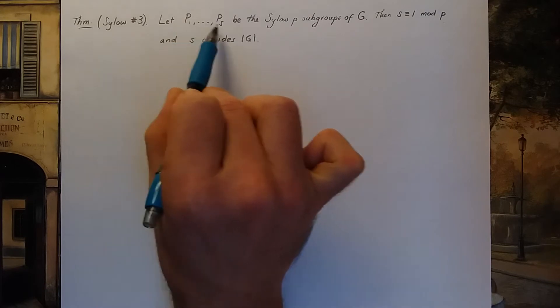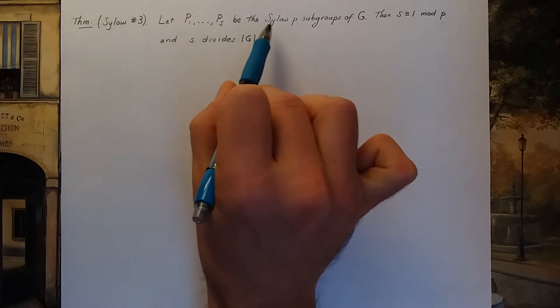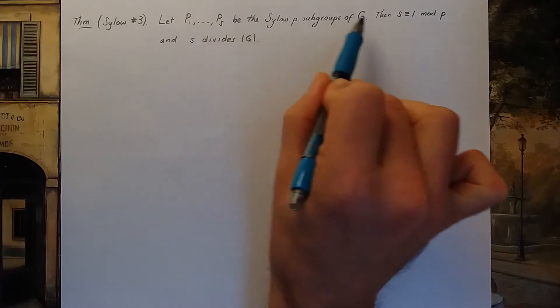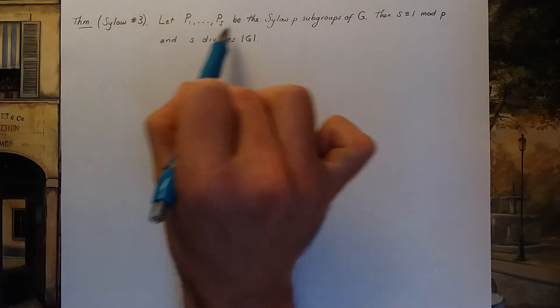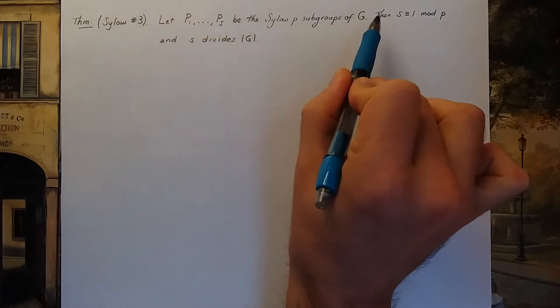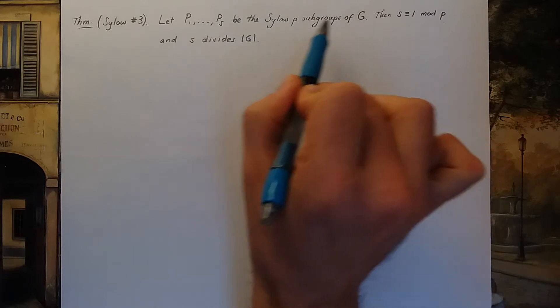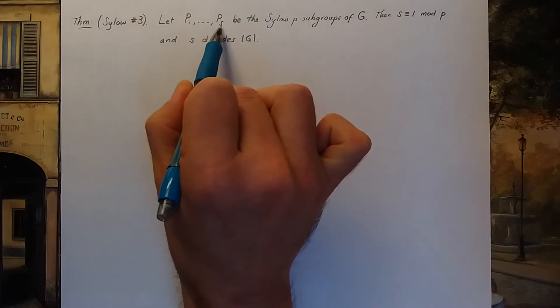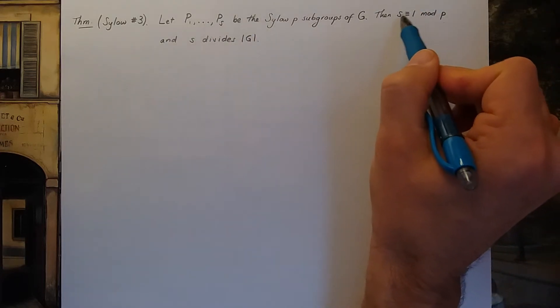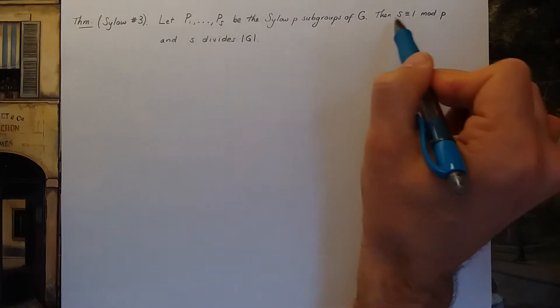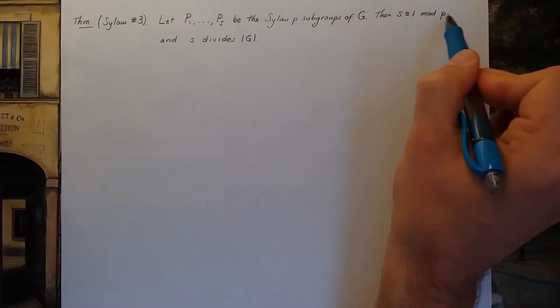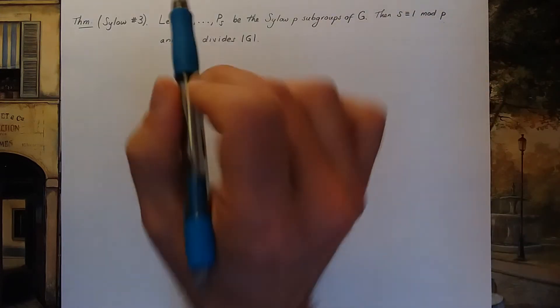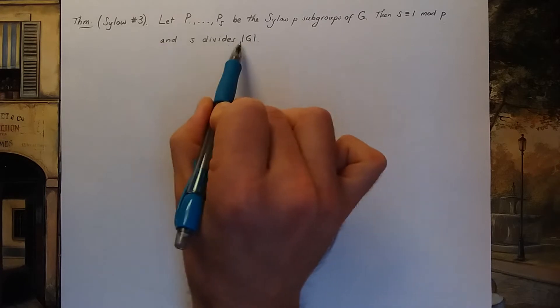Let P₁ through Pₛ be all possible CELO p-subgroups of G. So write down all possible CELO p-subgroups of G. There are S of them. This theorem says that S is congruent to 1 mod p. That means the remainder after S is divided by p is one, and S divides the size of the group.